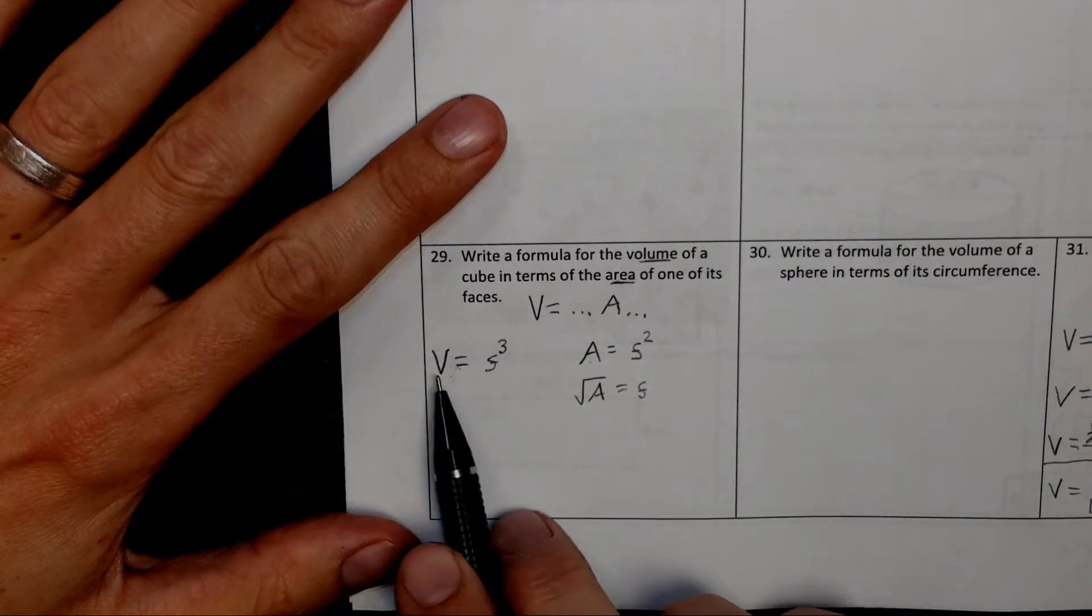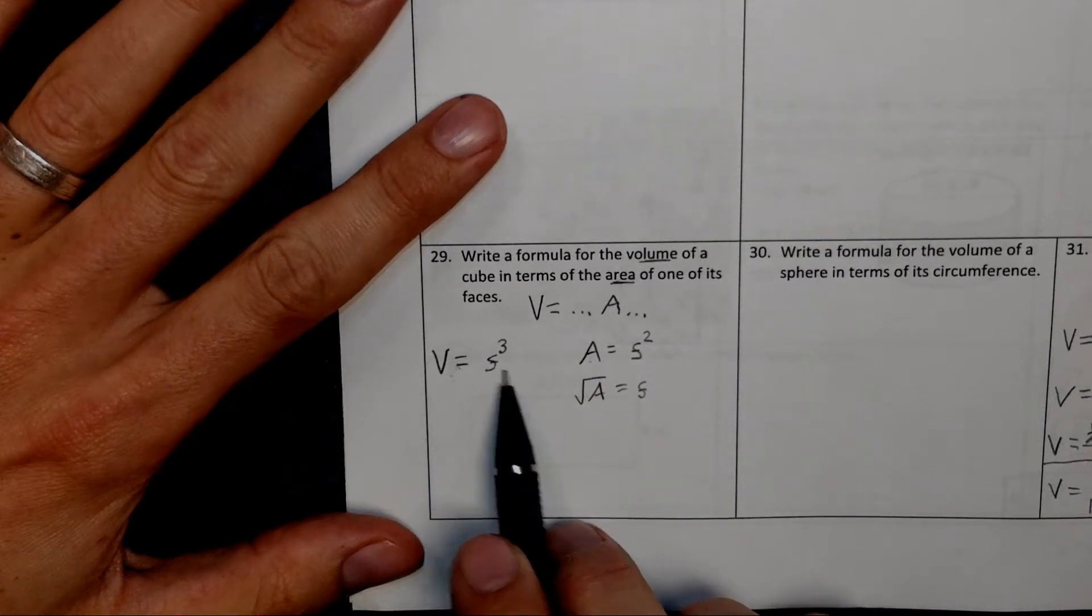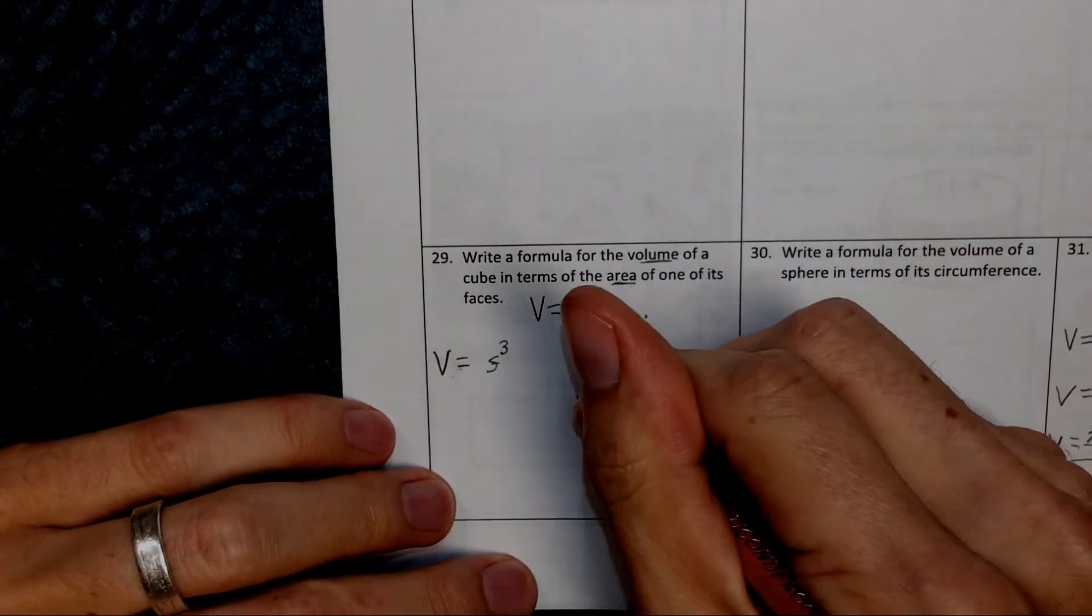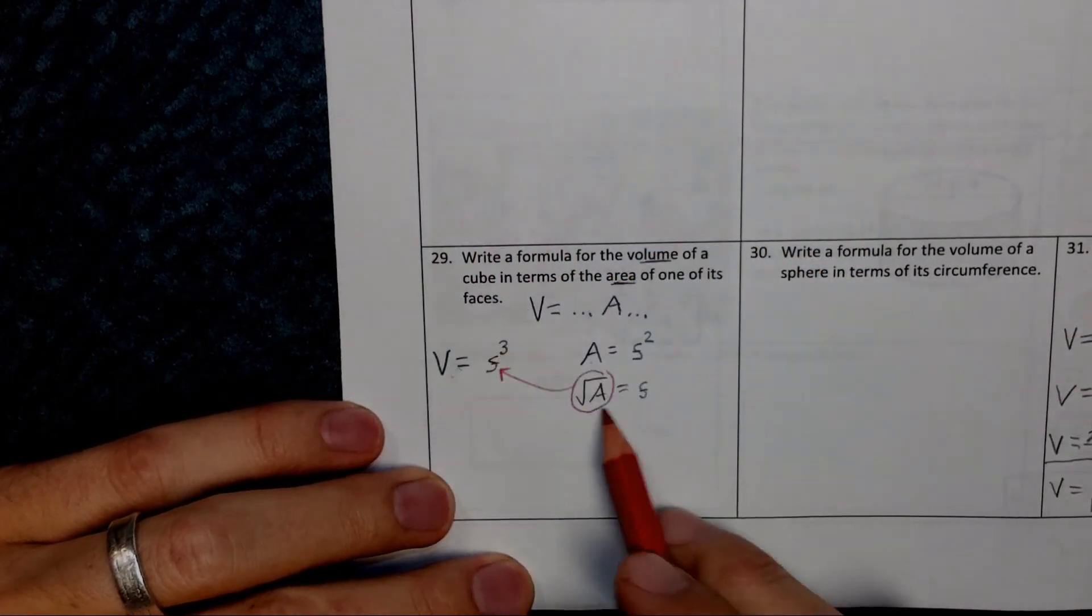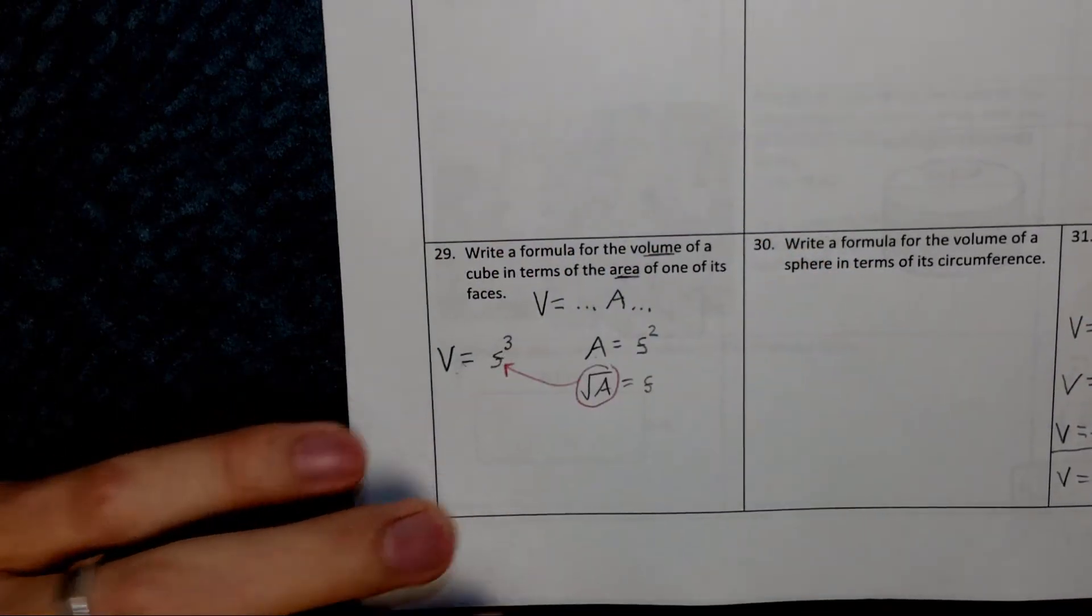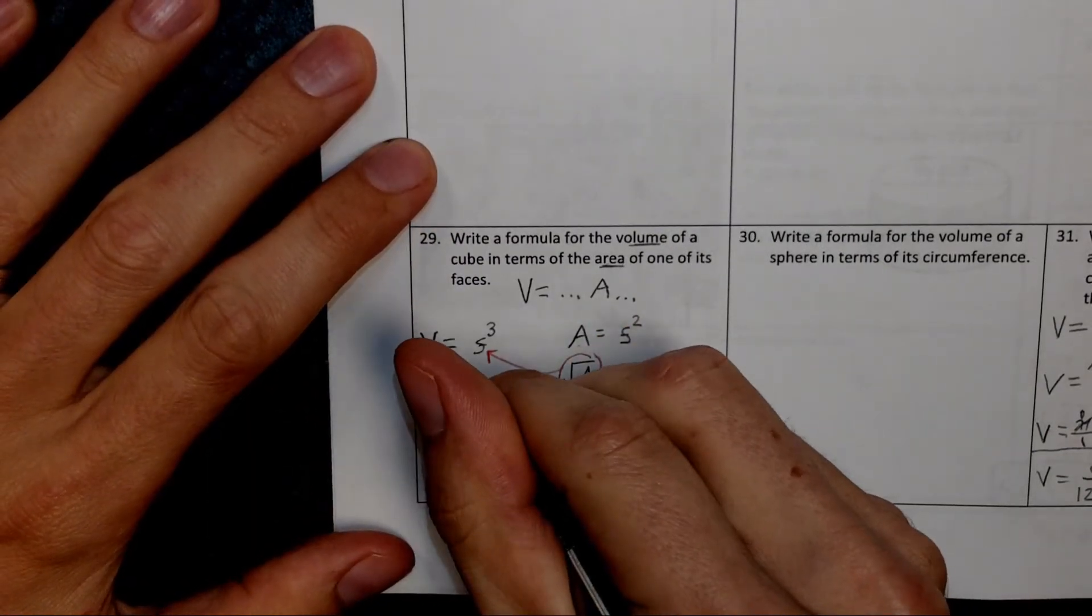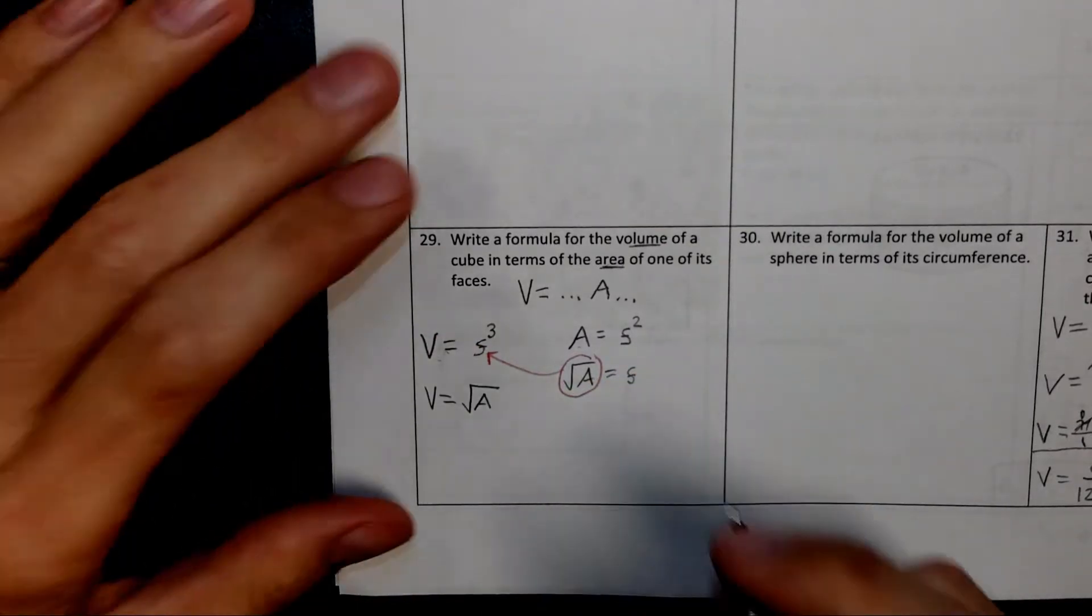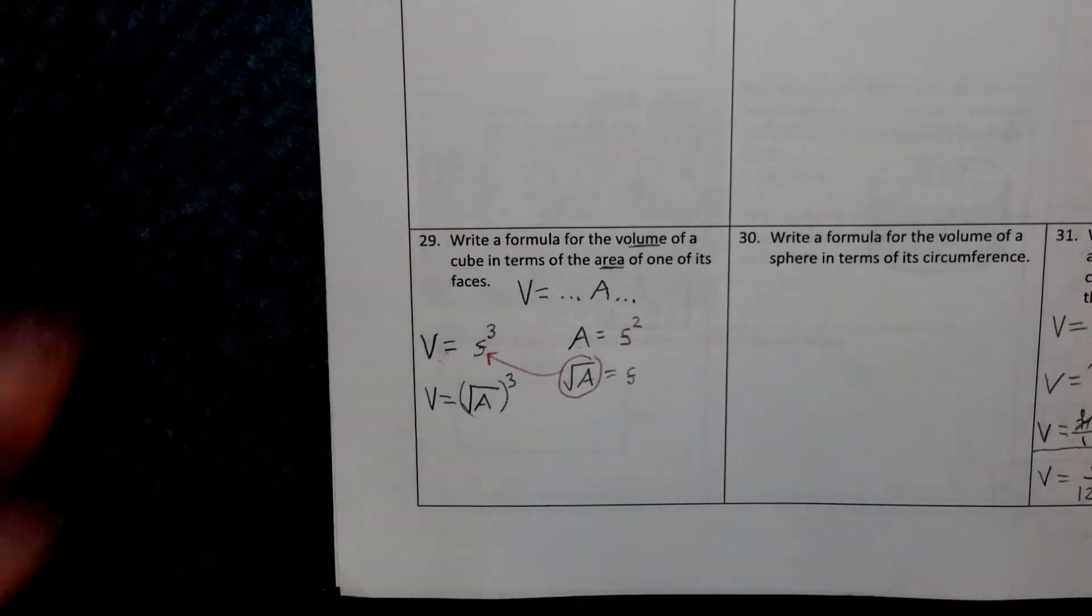So what we're going to do is take this S right here, the side length, and write it in terms of the area. In other words, we're going to substitute in the square root of A for the side length because they are equal. So then the volume would be equal to the square root of the area cubed.